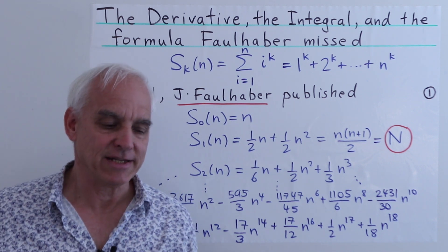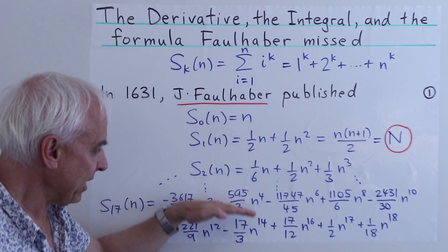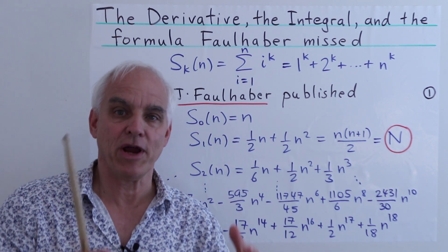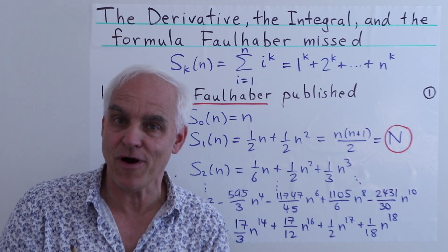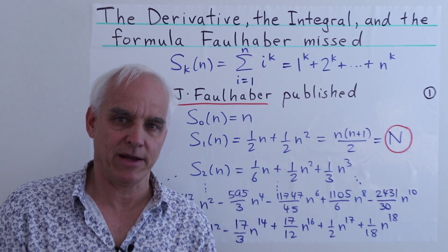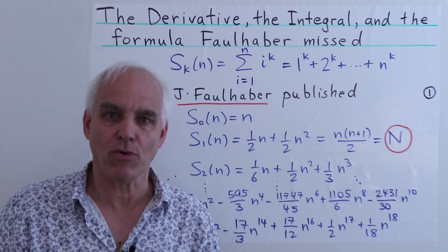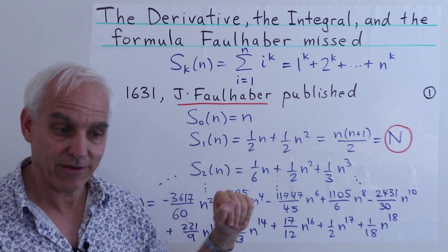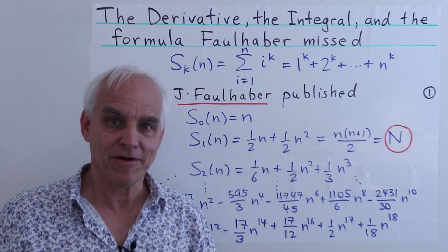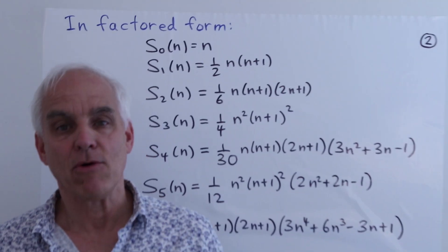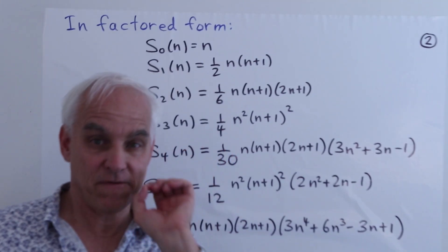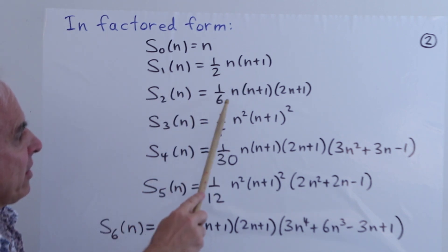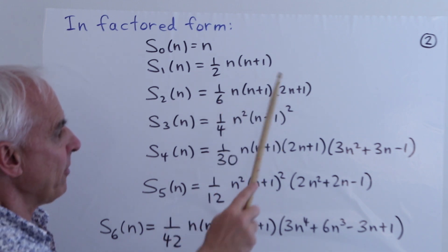What we're interested in is a technology for developing these polynomials which doesn't rely on the linear algebraic framework we've been using so far. We're going to show a more elementary, purely algebraic high-school approach to going from one polynomial to the next — a remarkable formula. Often these Faulhaber polynomials are written in factored form; for example S_2(n) can be written as one-sixth of n times (n+1) times (2n+1).